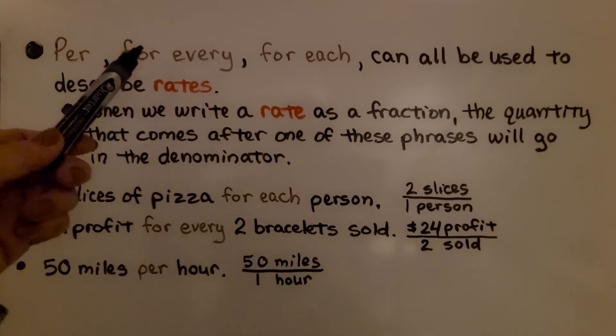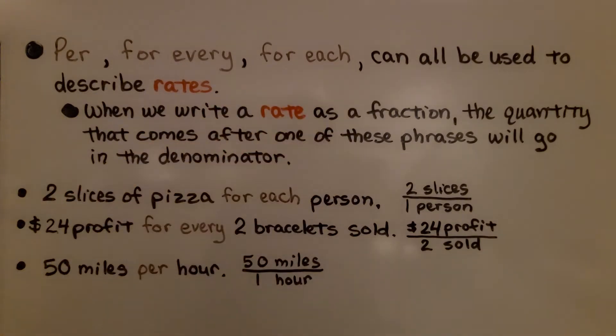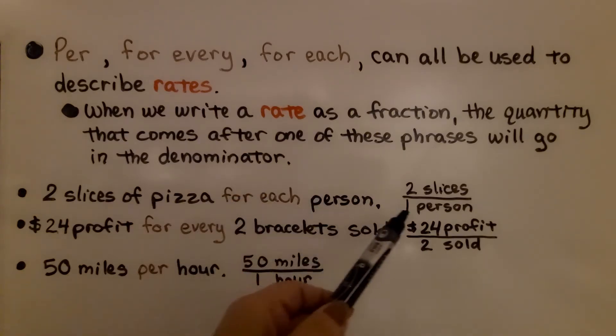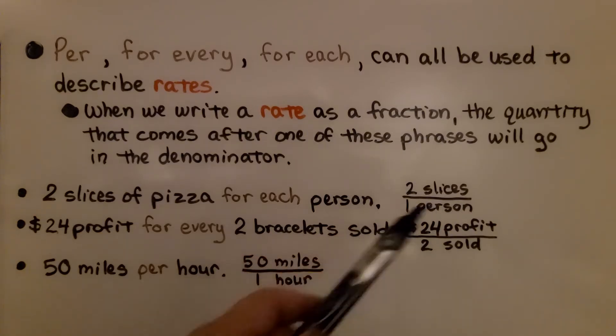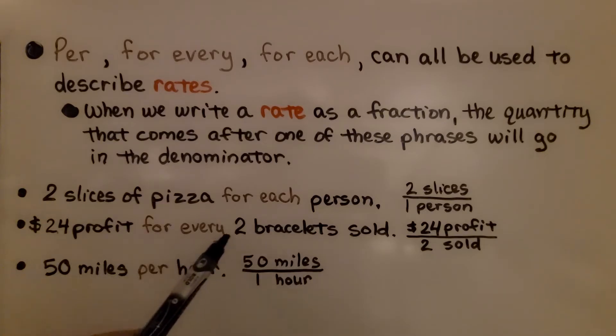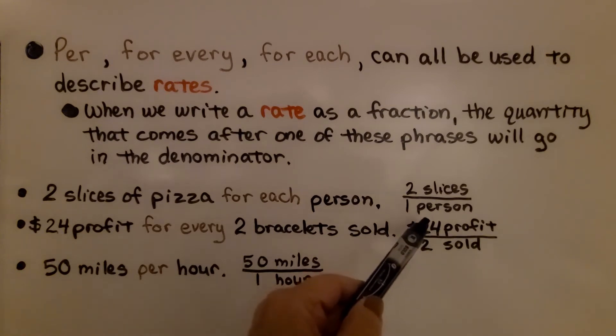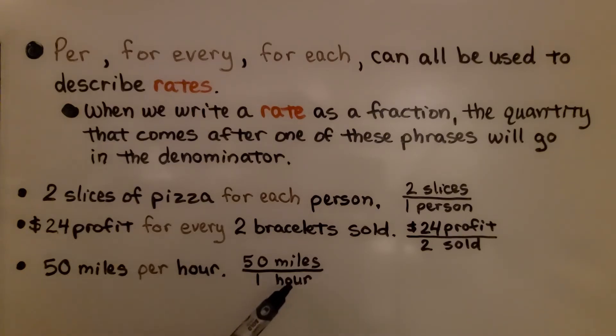Per, for every, for each can all be used to describe rates. When we write a rate as a fraction, the quantity that comes after one of these phrases will go in the denominator. If we have two slices of pizza for each person, person's going to be the denominator. We have two slices for one person. $24 profit for every two bracelets sold, the bracelet sold is the denominator. We have a $24 profit over the two sold. 50 miles per hour. The hour is going to be in the denominator. We have 50 miles in one hour.